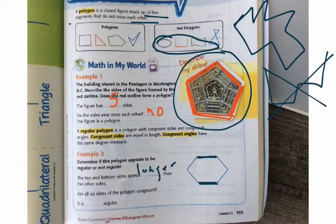Are all six sides of the polygon congruent? No, all six sides are not congruent because not all of them are the same. So it is not a regular polygon.